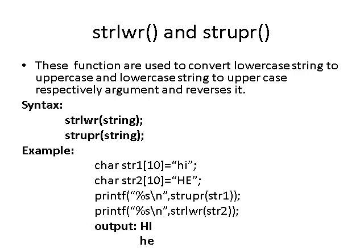The strlwr() and strupr() functions are used to convert strings between cases. strlwr() converts an uppercase string to lowercase, and strupr() converts a lowercase string to uppercase. For example, with str1 as 'hi' in lowercase, strupr(str1) converts it to 'HI' in uppercase. With str2 as 'HE' in uppercase, strlwr(str2) converts it to 'he' in lowercase.